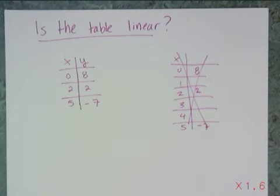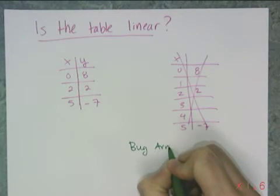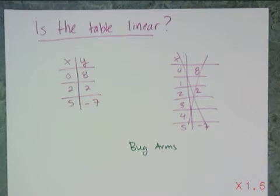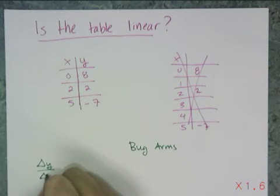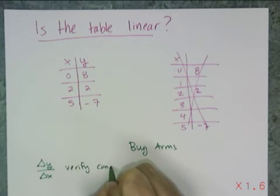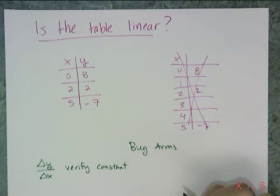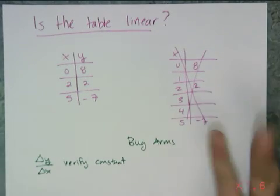And so I'm going to use a technique that I like to call bug arms. And you'll see why I call it bug arms in a second. So my goal is to find the change in y over the change in x and then verify that it's constant. Because it is constant, then that means this table is linear. And if it's not constant, it's not linear.